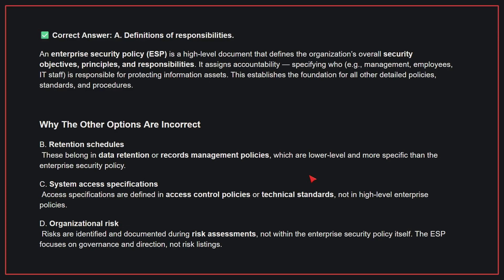Why are the other options incorrect? B: Retention schedules — these belong in data retention or records management policies, which are lower-level and more specific than the enterprise security policy. C: System access specifications — access specifications are defined in access control policies or technical standards, not in high-level enterprise policies. D: Organizational risk — risks are identified and documented during risk assessments, not within the enterprise security policy itself; the ESP focuses on governance and direction, not risk listings. Therefore, the correct answer is A.